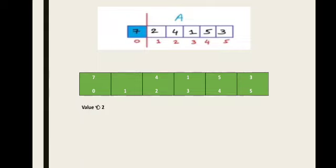If you have one element in a set, the set is always sorted, and all other elements are part of the unsorted subset. We will keep picking elements from the unsorted subset and inserting them into the sorted subset, expanding the sorted subset until the unsorted subset becomes empty. Cells in blue are part of the sorted subset.